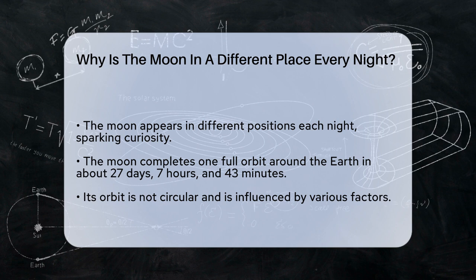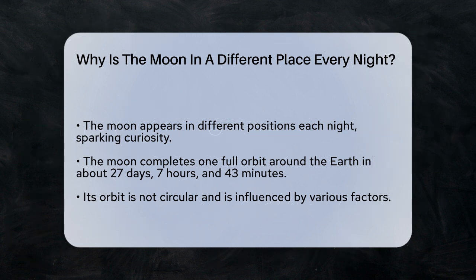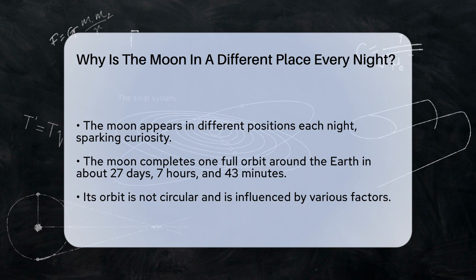To start, let's talk about the Moon's orbit around the Earth. The Moon takes approximately 27 days, 7 hours, and 43 minutes to complete one full orbit around our planet. However, this orbit is not a simple circle. It's influenced by several factors.